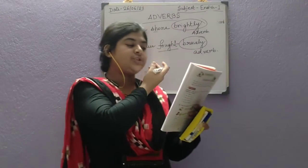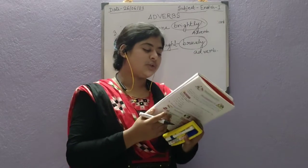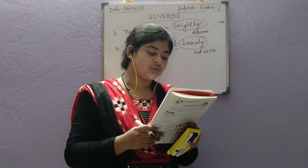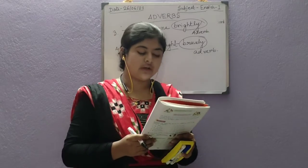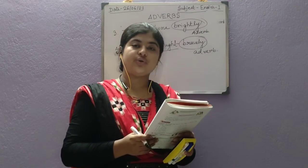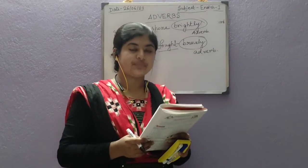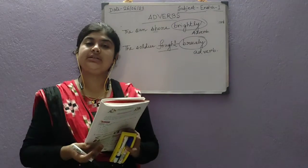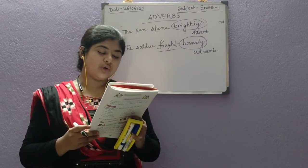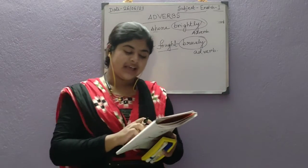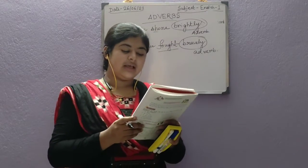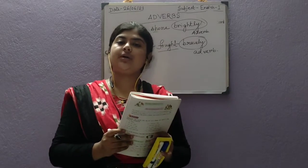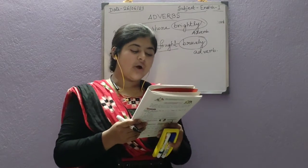So the words slowly, quickly, brightly, and bravely are adding something to the meaning of the verbs: walked, ran, shone, and fought. The adverbs are telling how the verbs — or the actions — have been done. Therefore, adverbs always tell how the verb or action is done. Now come to the exercises.